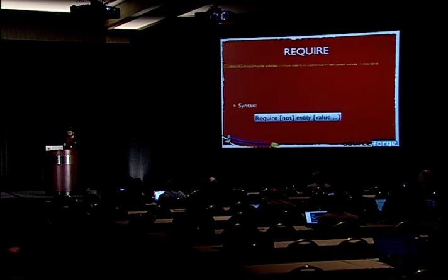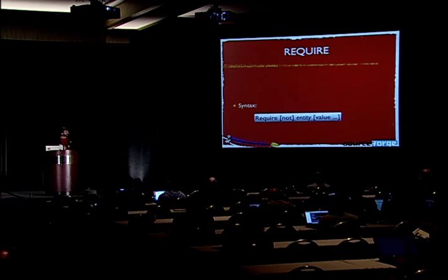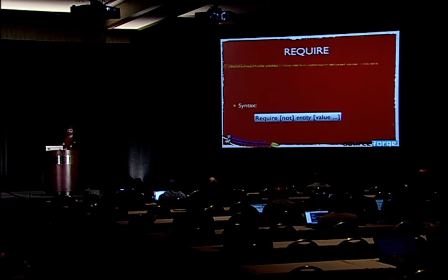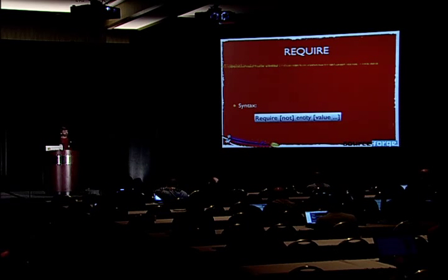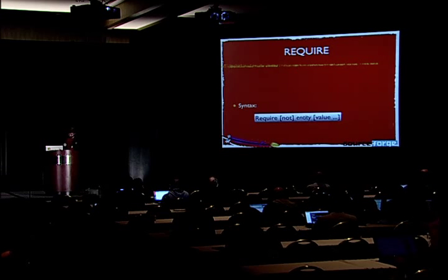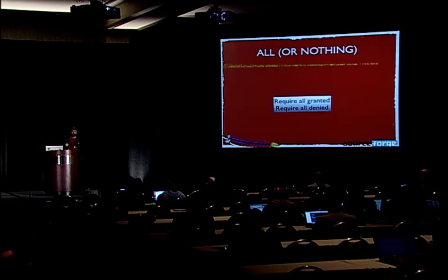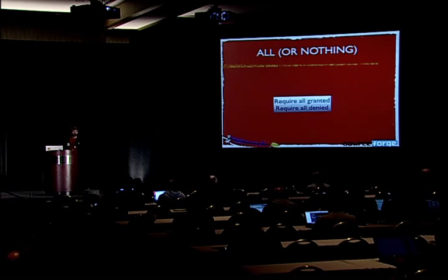Here is the syntax: 'require,' optionally with a 'not' to negate it, then some entity or attribute to consider, and then a value to check. 'Require all granted' and 'require all denied' are the replacements for the old 'allow from all' and 'deny from all' syntax.